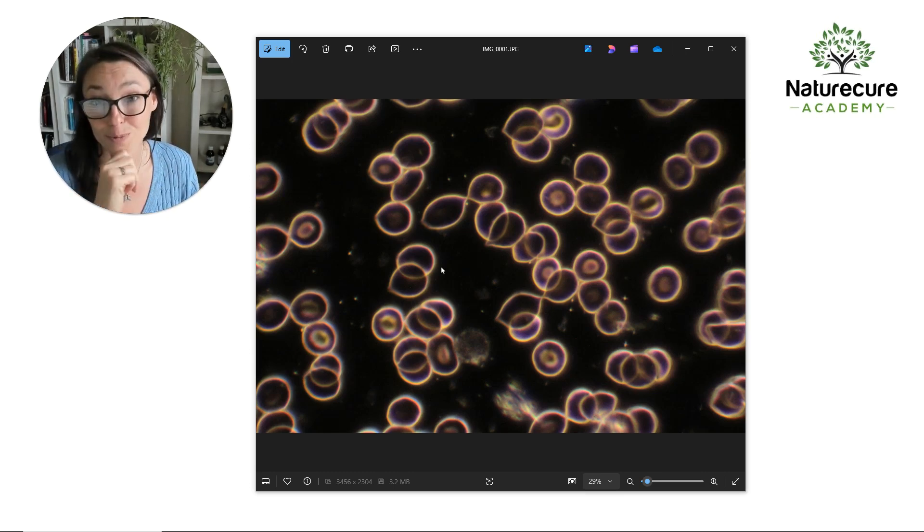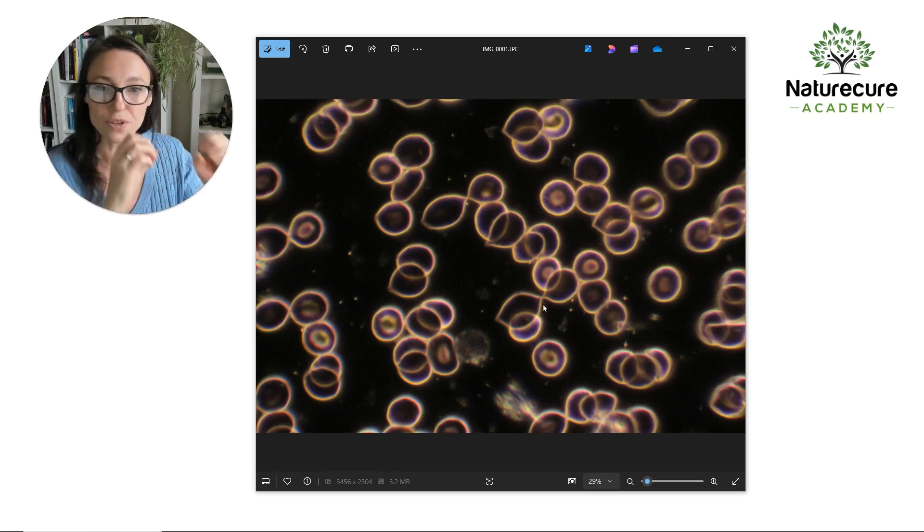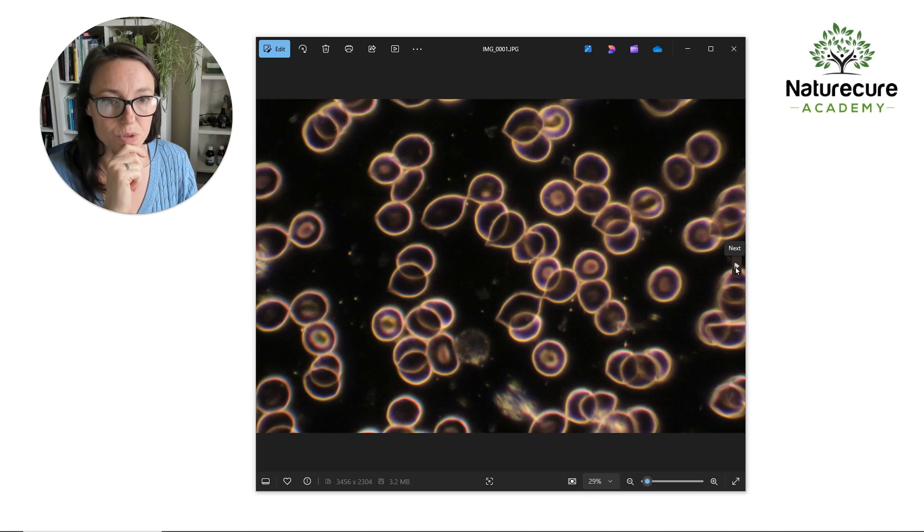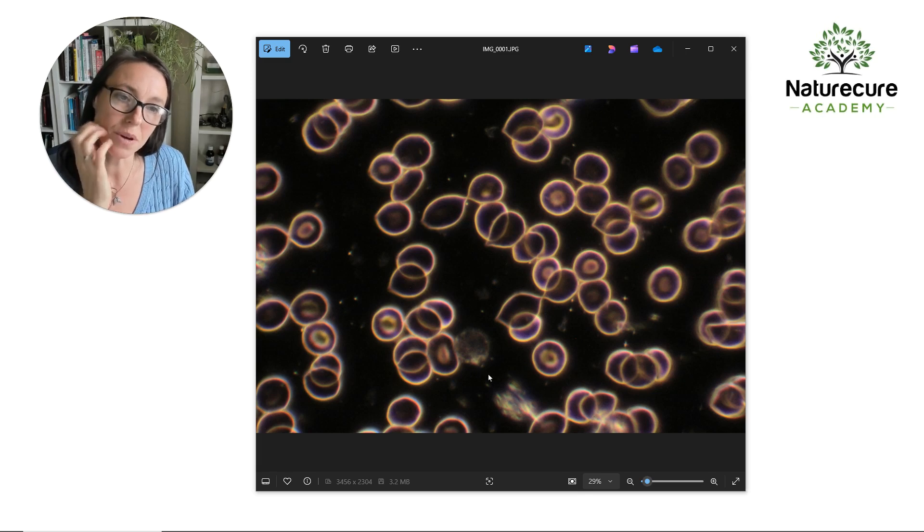So we want those cells to be bouncing around. That's called the zeta potential—the way that those cells repel each other in circulation. So that's just one picture I can talk about from my client to show you some things that are off the radar as far as normal optimum blood goes.